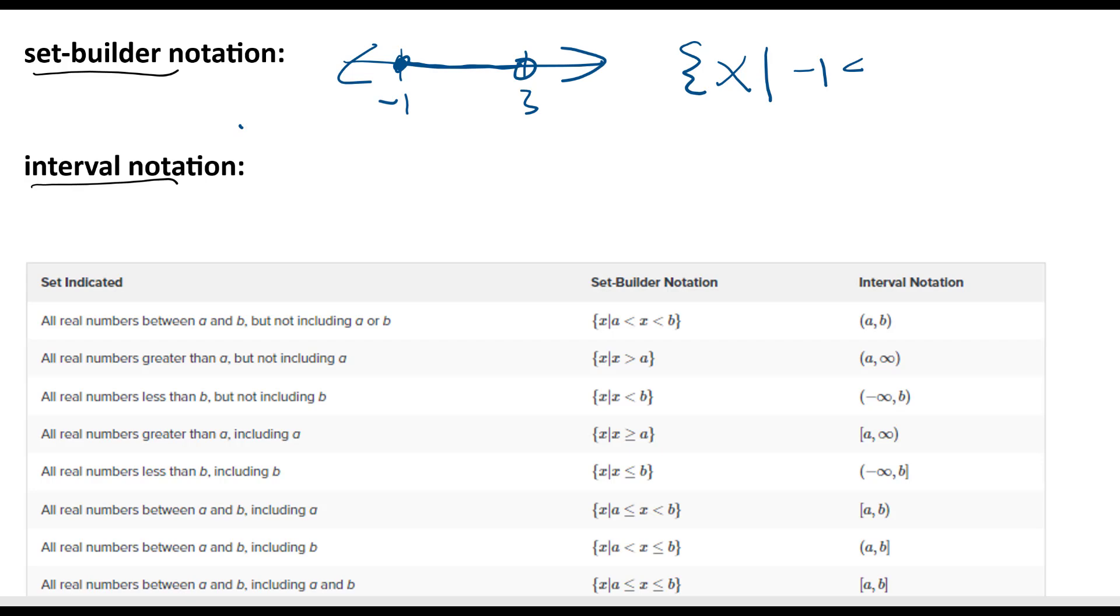So like negative 1 is less than or equal to x less than 3. And that's how we'd express that in set-builder notation. It's a more formal way of writing the values that are within a solution set for an inequality.